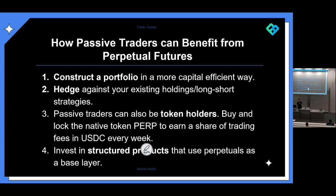Next I'll talk about how perpetual futures can help passive traders or investors. One way is constructing a portfolio in a more capital efficient way. Another is hedging against your existing holdings or using long/short strategies. Another way is investing in the token of the underlying perpetual DEX — pretty much all DEXes have their own token with programs where you can earn rewards or a share of fees by owning or staking. Finally, investing in structured products that use perpetuals as a base layer.